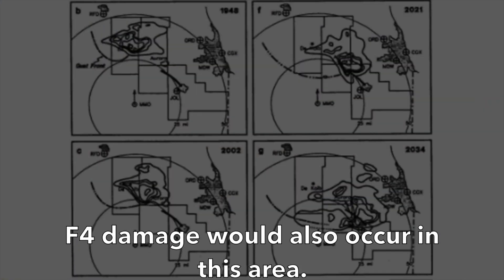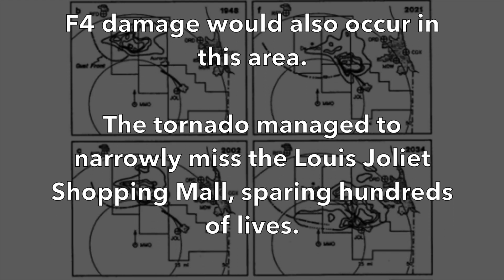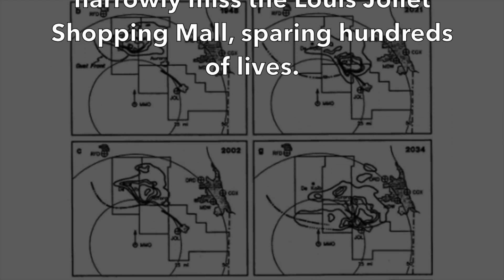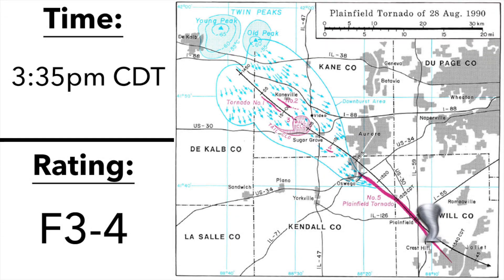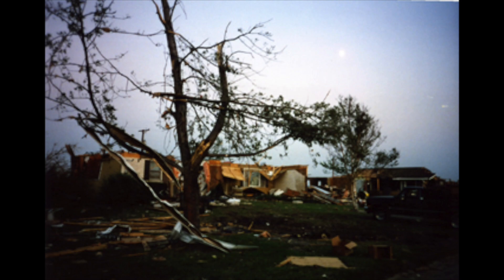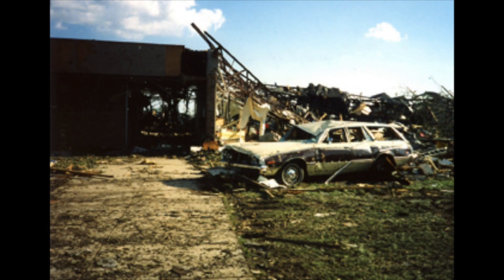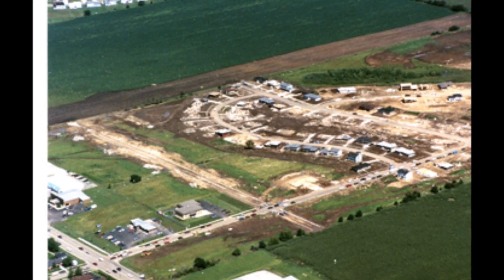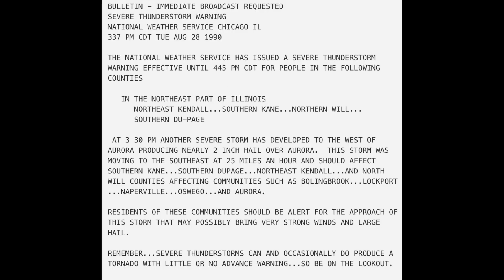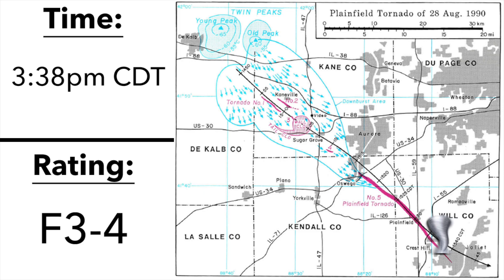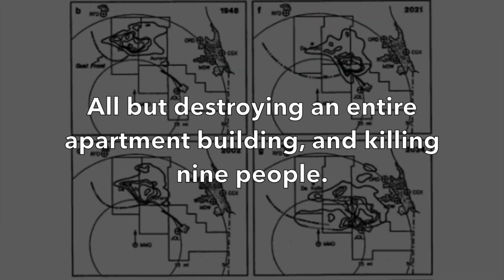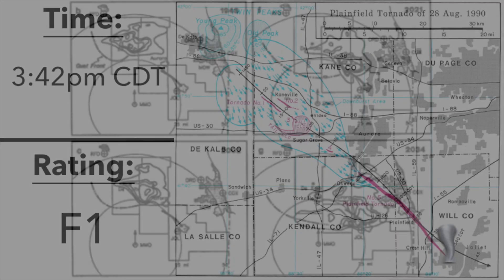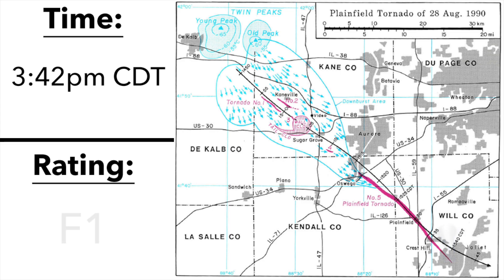At 3:34 p.m., the tornado pulverized Lily Cash and Peerless subdivisions before crossing Interstate 55 and sending several automobiles airborne — F4 damage also occurring in this area. The tornado managed to narrowly miss the Louis-Joliet shopping mall, sparing hundreds of lives. At 3:35 p.m., the tornado decimated the Crystal Lawn subdivision and Grand Prairie Elementary School with F3 to F4 damage. A minute later, the tornado struck the Warwick subdivision in Joliet, destroying 50 homes and taking two lives. At 3:37 p.m., the National Weather Service issued a severe thunderstorm warning for Southern Kane, Northern Kendall, DuPage, and Will Counties. At 3:38 p.m., the Plainfield tornado struck the Crest Hill Lakes apartment complex, all but destroying an entire apartment building and killing nine people.